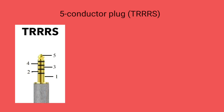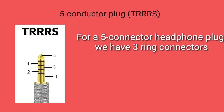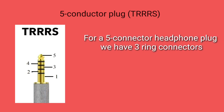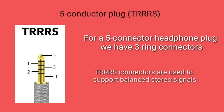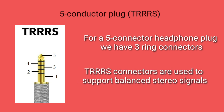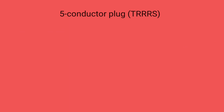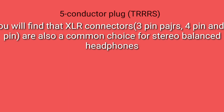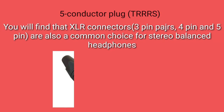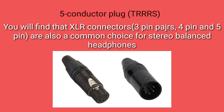Five conductor plug TRRRS. For a five conductor headphone plug, we have three ring connectors. T, R, R, R, S connectors are used to support balanced stereo signals. You will also find that XLR connectors are a common choice for stereo balanced headphones.